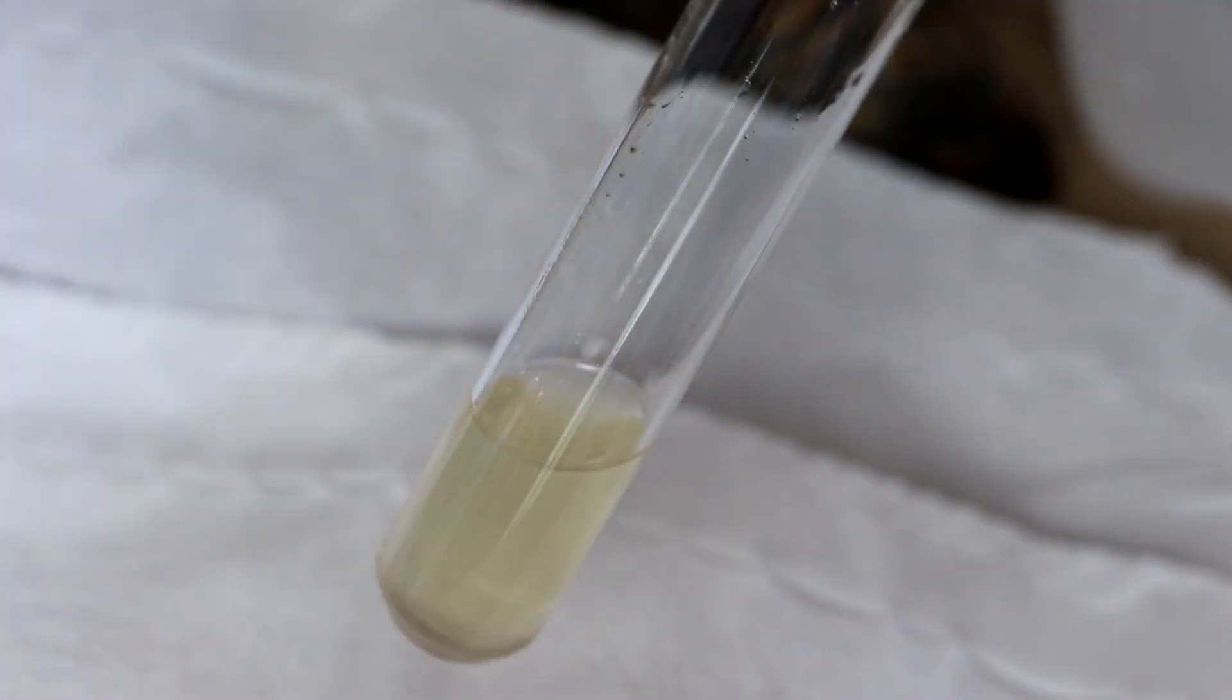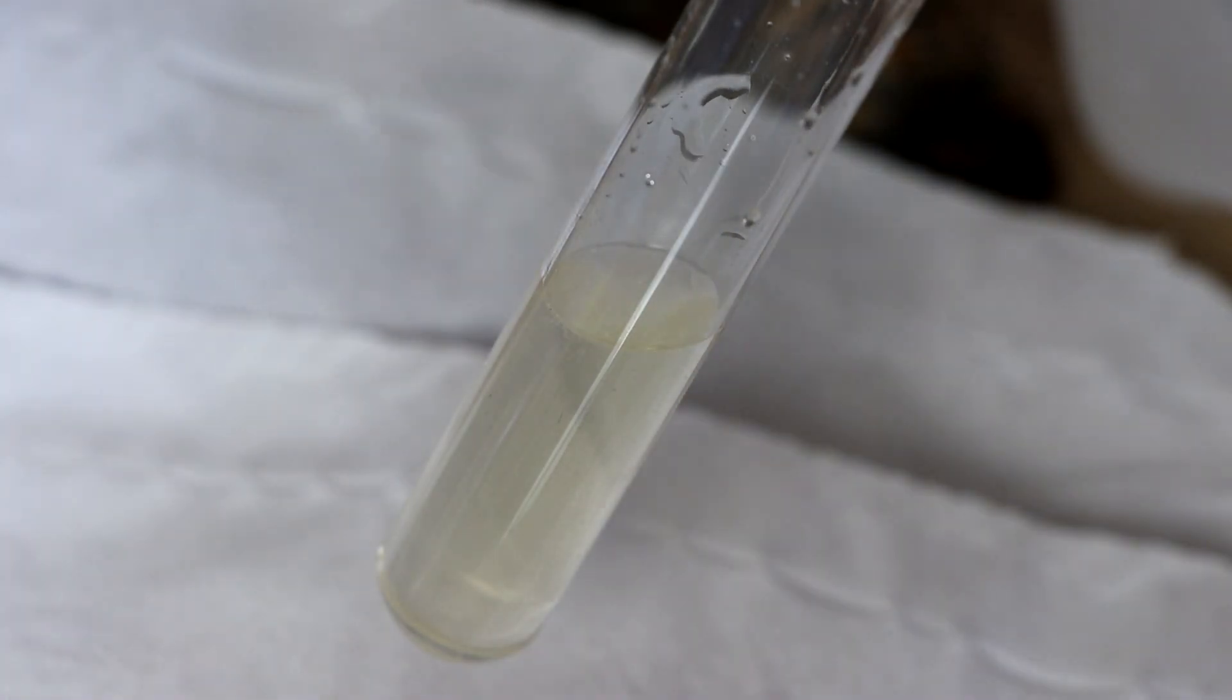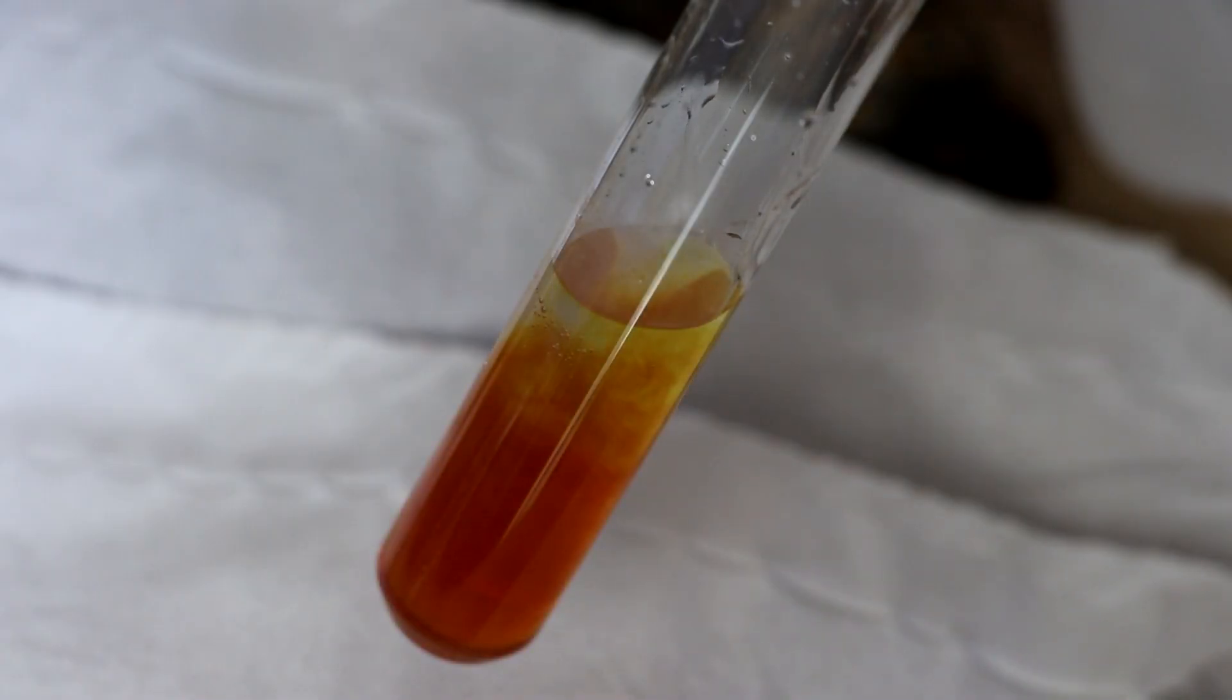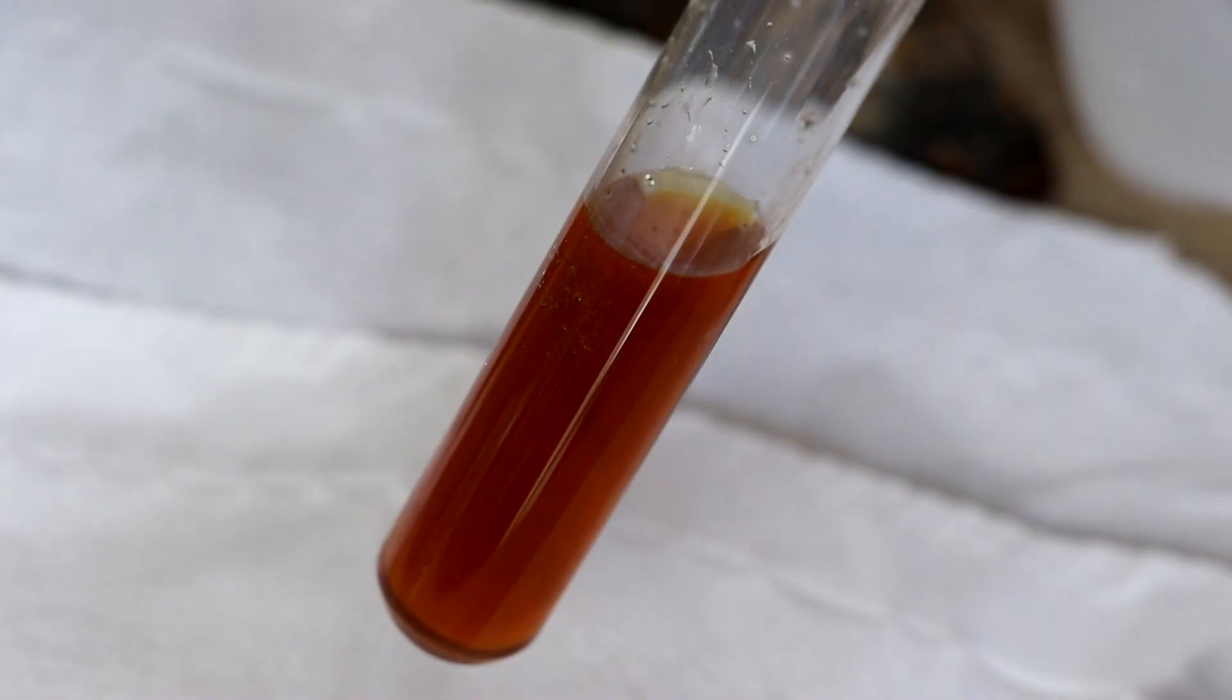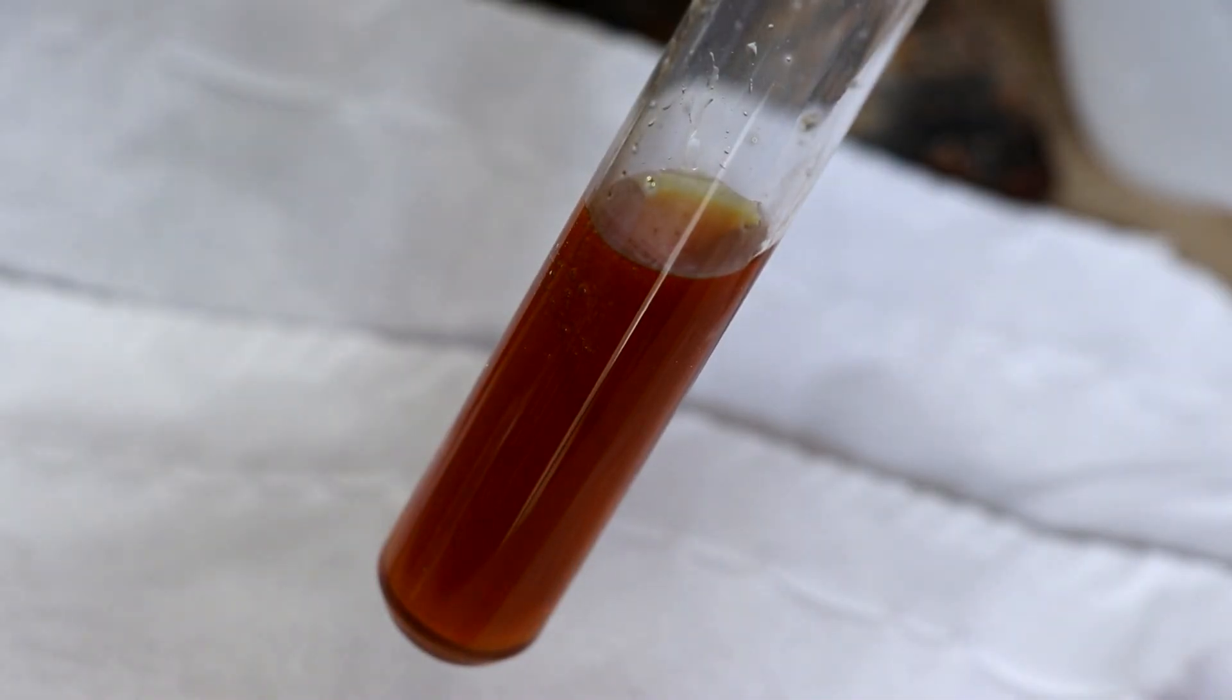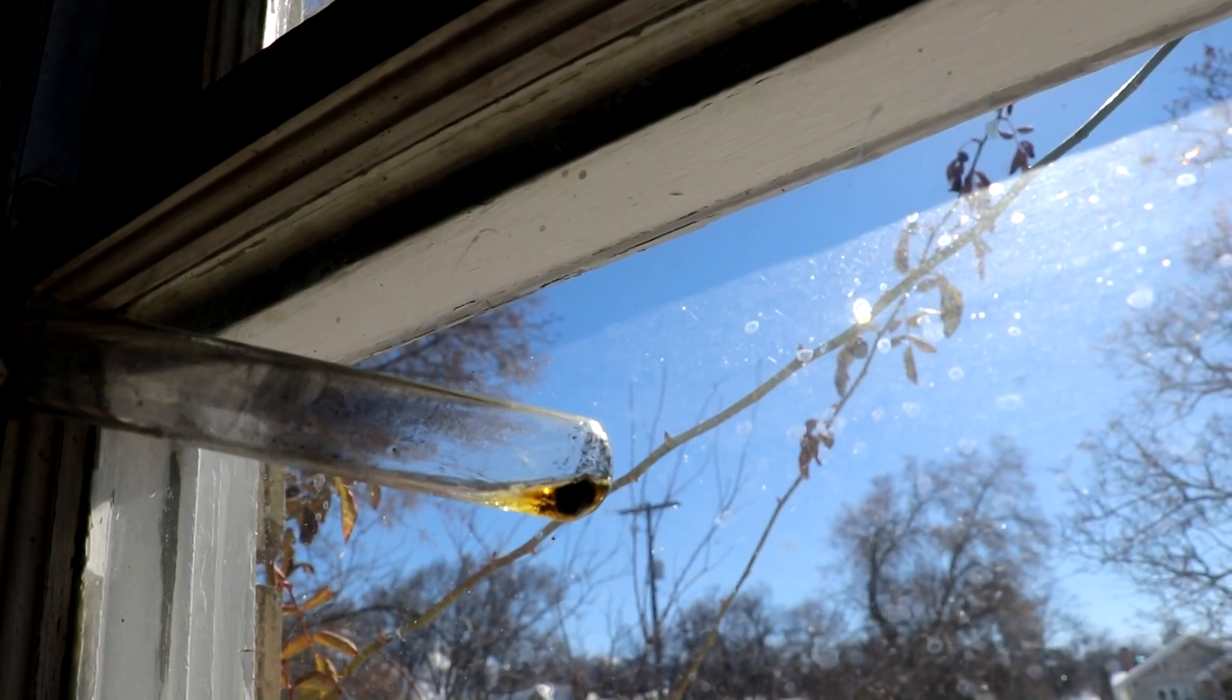So now I'm going to acidify the solution with a little bit of hydrochloric acid. Okay. And now I'm going to add in some hydrogen peroxide. There we go. Elemental iodine. So I'll let this finish reacting. We'll go decant off the liquid and we'll go look at the iodine in the sunlight. So there it is.